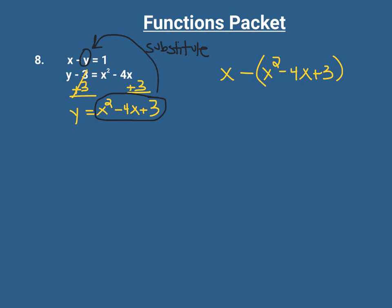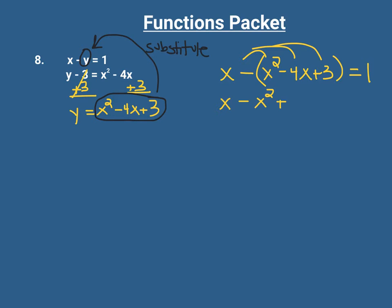All we did was get y by itself in one of the equations — you could have gotten x by itself, it totally does not matter — but once we get that variable by itself, we substitute it into the other equation. Now we have one equation with one variable, and we can solve for it. Let's distribute the negative: we get negative x squared, plus 4x, and minus 3, equals 1.